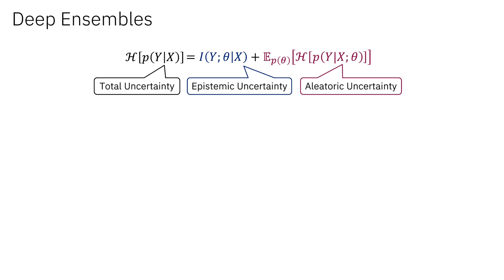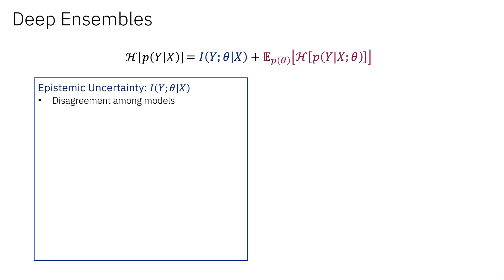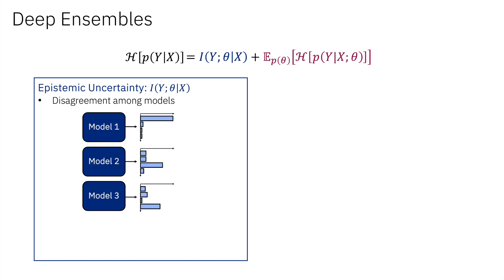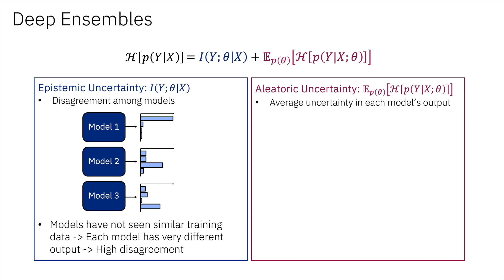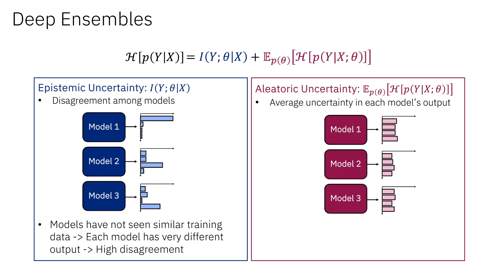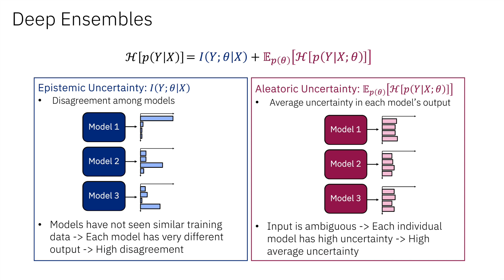The first term on the right can be understood as a disagreement among each model, and it corresponds to epistemic uncertainty. When the model sees unfamiliar queries it has not seen during training, its output behavior will be heavily influenced by random initialization and model architecture rather than the training data, resulting in high disagreement among models. The second term can be understood as the average entropy of each model's output, corresponding to aleatoric uncertainty. When the input bears multiple answers — for example, when the input is ambiguous — models would all produce ambiguous output, and thus high average uncertainty.